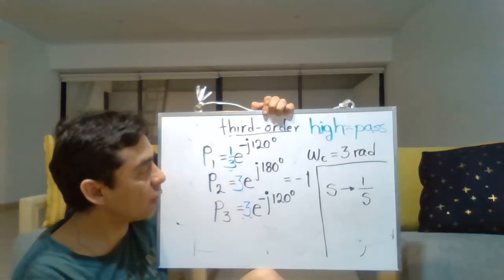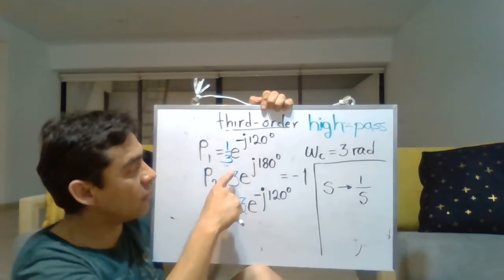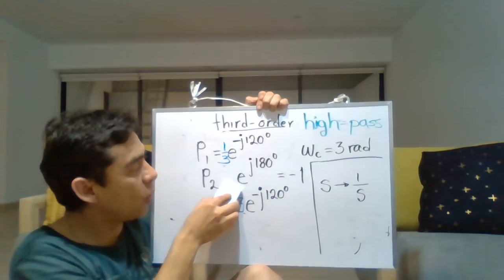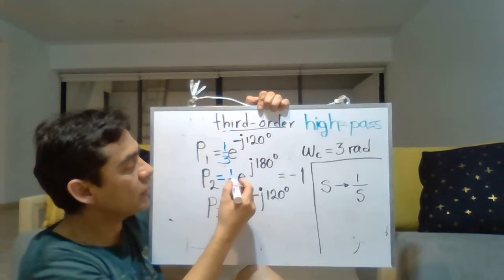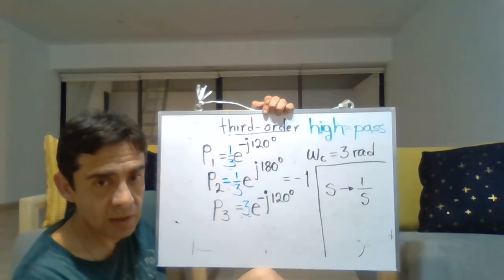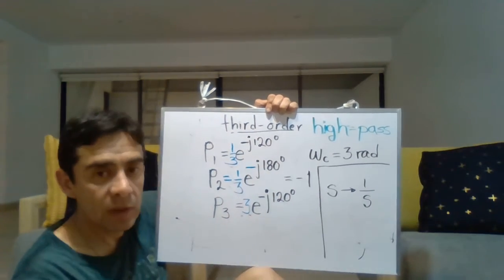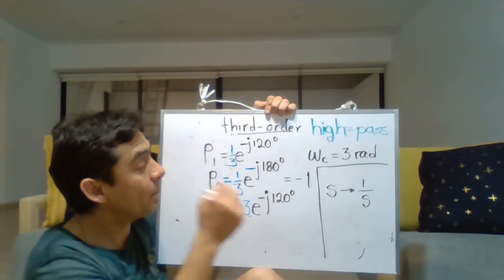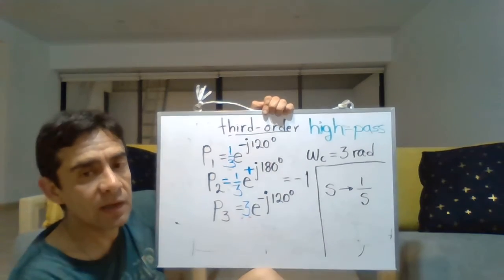Going to the second pole: taking the inverse gives a magnitude of 1 over 3. Taking the inverse of the exponential means taking the negative of the angle. Note that minus 180 is the same as 180, so either answer is correct.